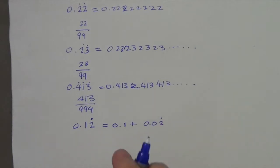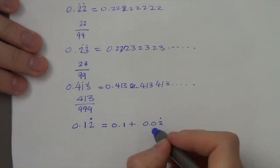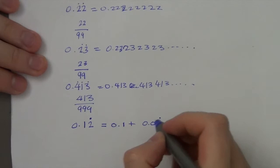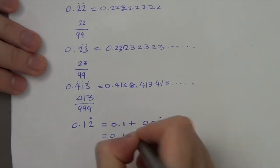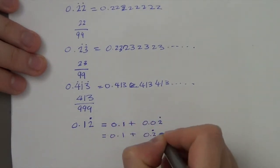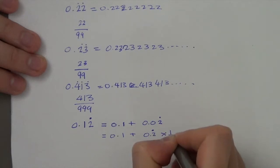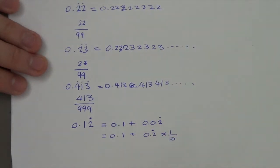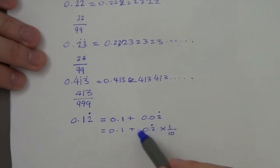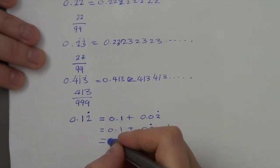Now, we can write 0.02 as 0.2 recurring times a tenth, or divided by 10. So those two are the same. That is the same as this. So let me rewrite this as fractions.